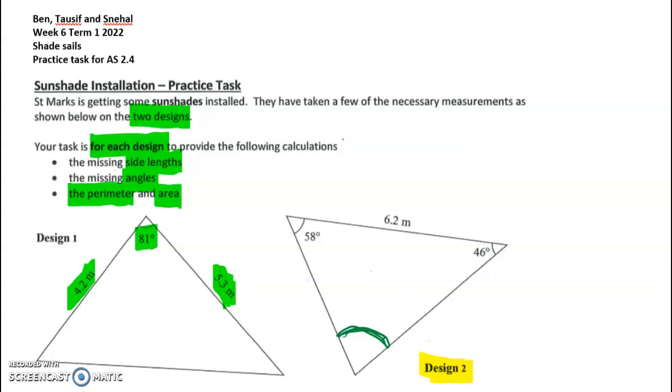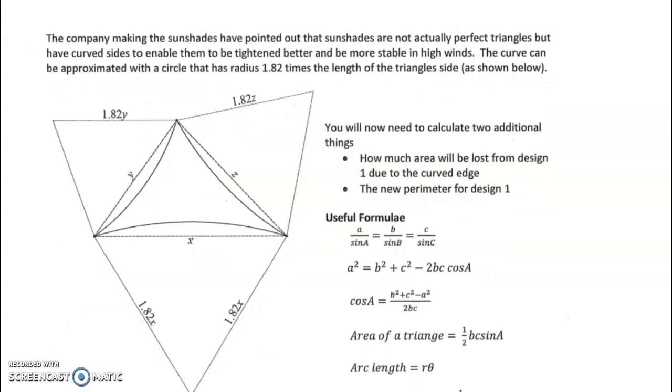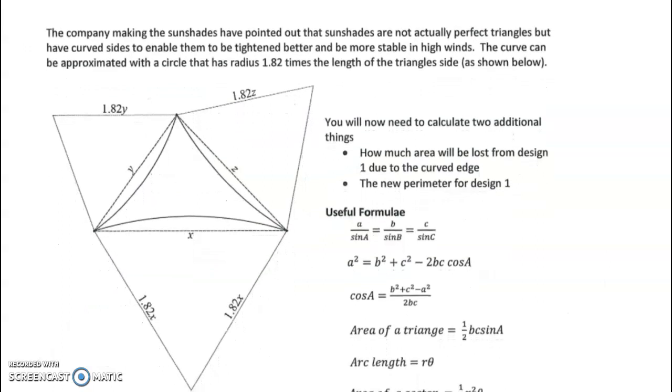The more interesting part is that the company making the sunshades has pointed out that sunshades are not actually perfect triangles but have curved sides. The curve can be approximated with a circle that has a radius 1.82 times the length of the triangle side as shown below.